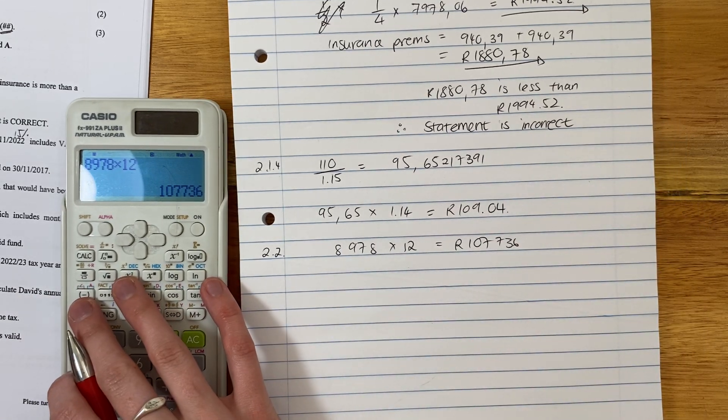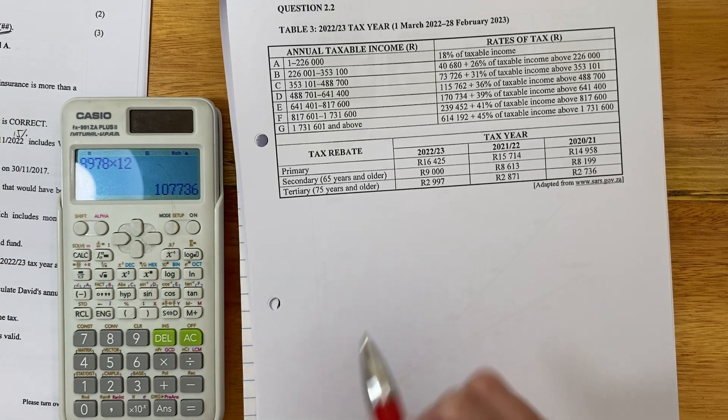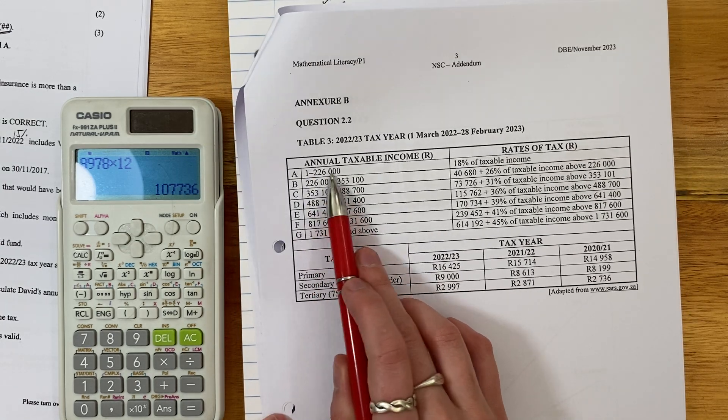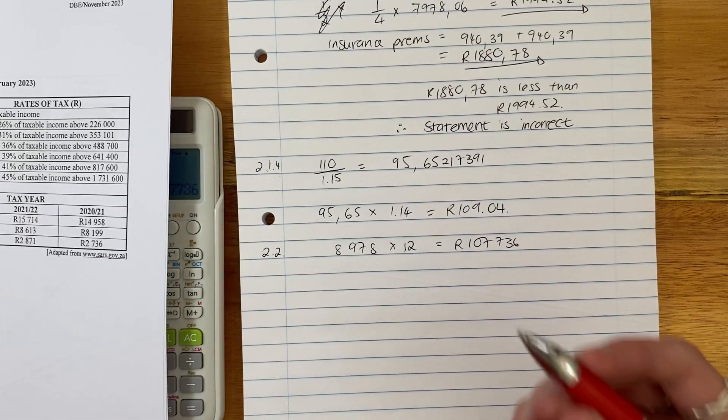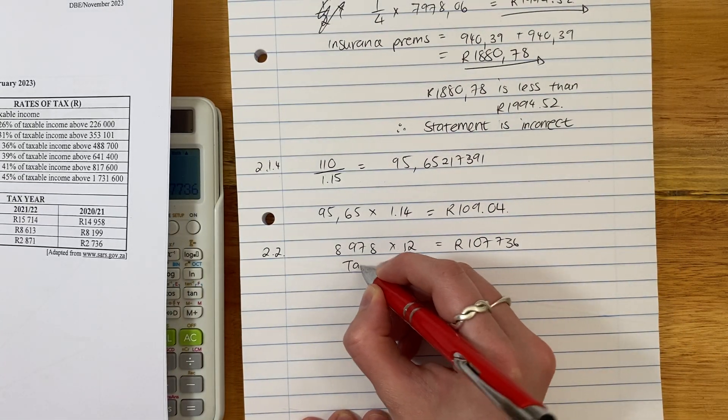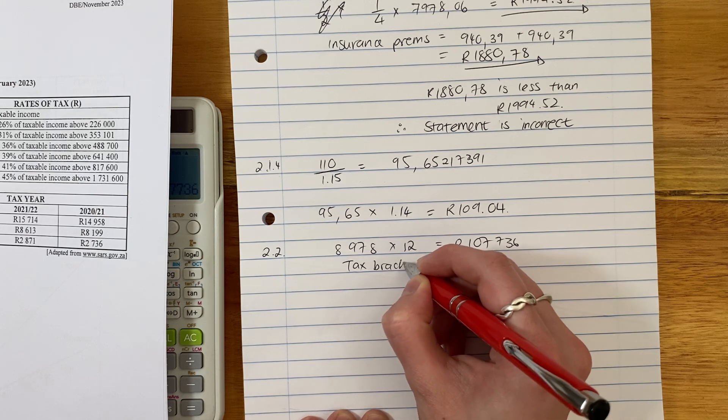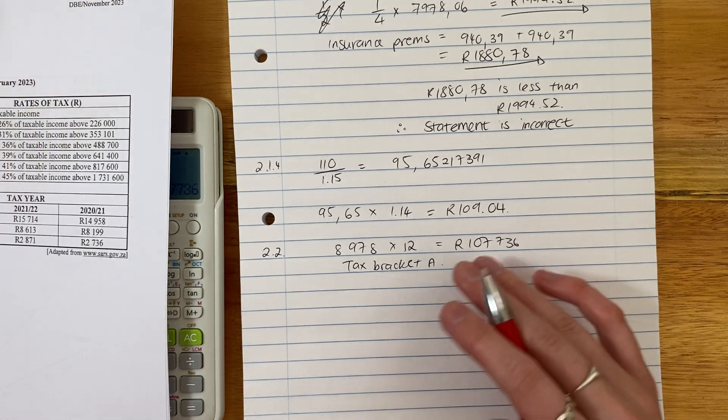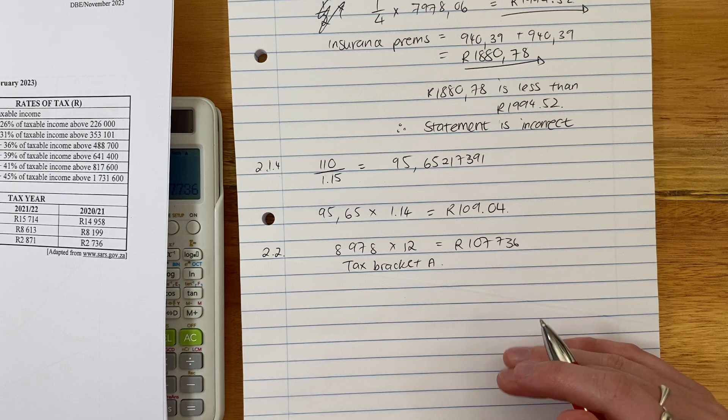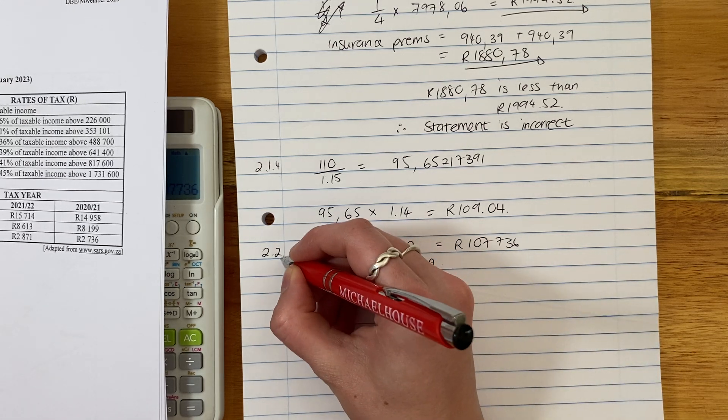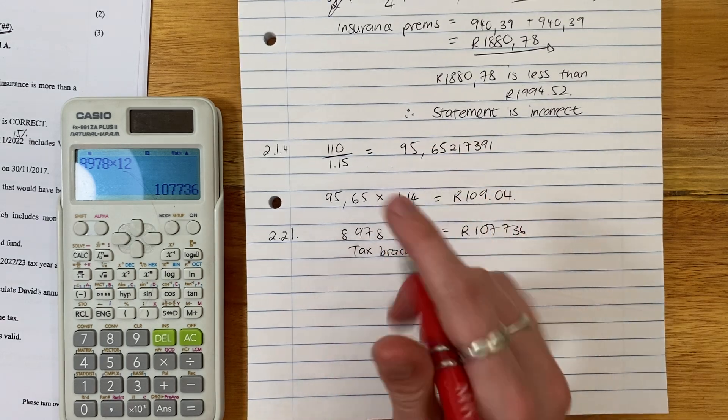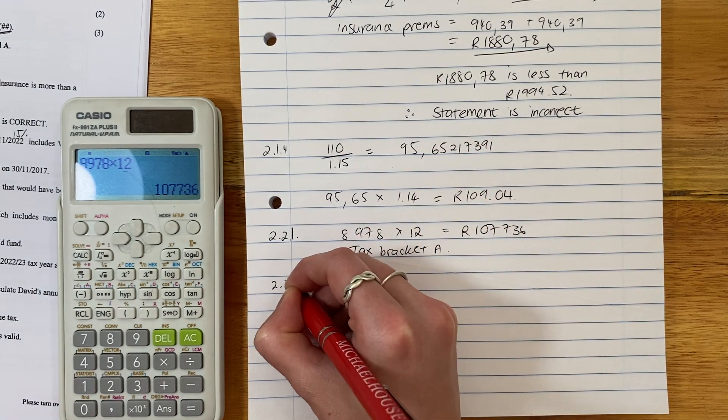Now, given that annual income, where's he going to sit? Well, he actually sits in the first income bracket, right? Because he's less than 226,000. So we say, well, he is in tax bracket A. And we're done. Because all they do, and this is a standard question, they often get you to figure out the tax bracket and then to calculate the tax. So we've done pretty well there. Just make sure that you label your questions correctly.